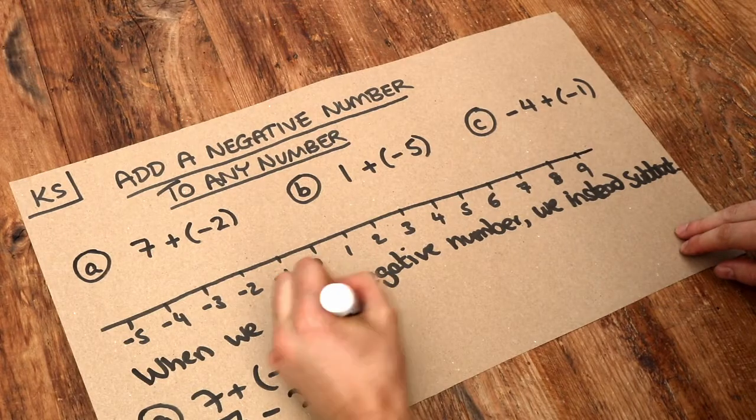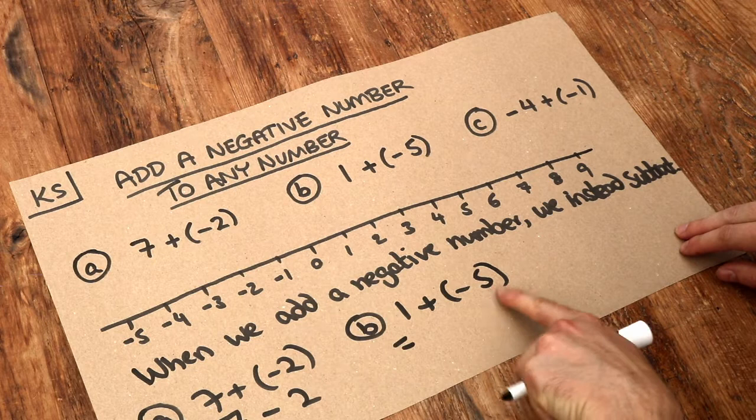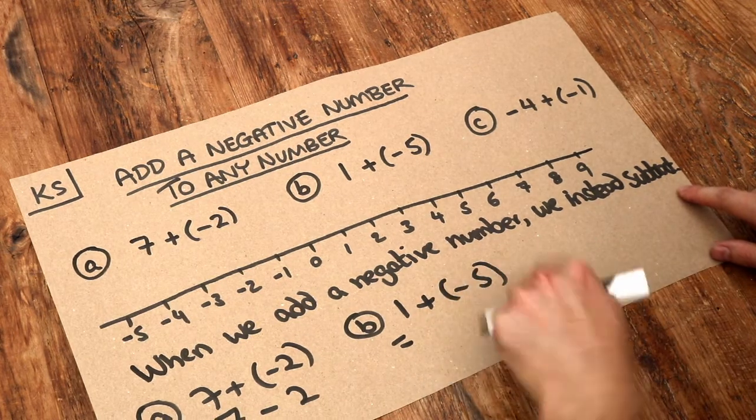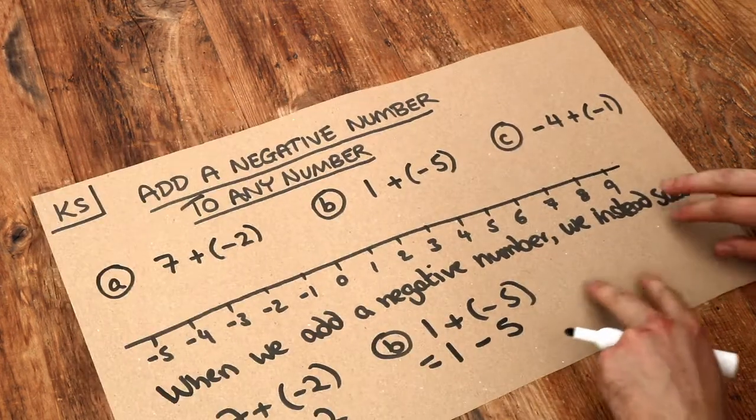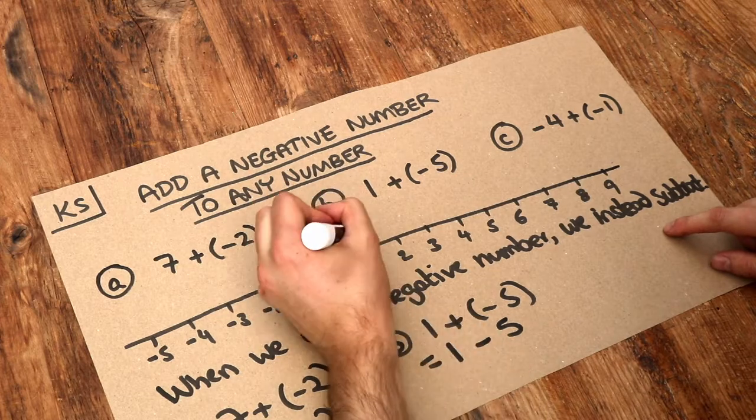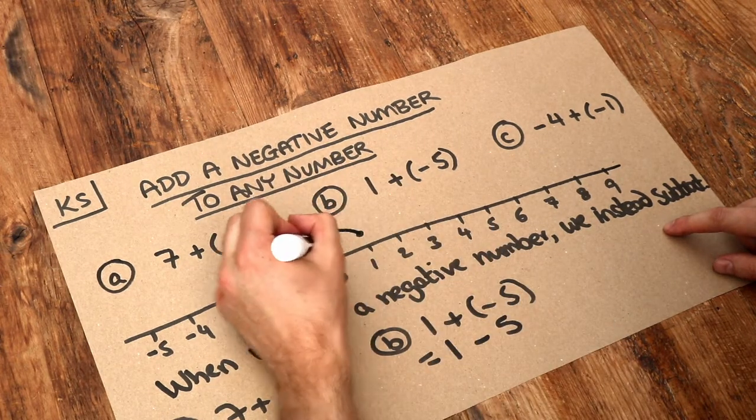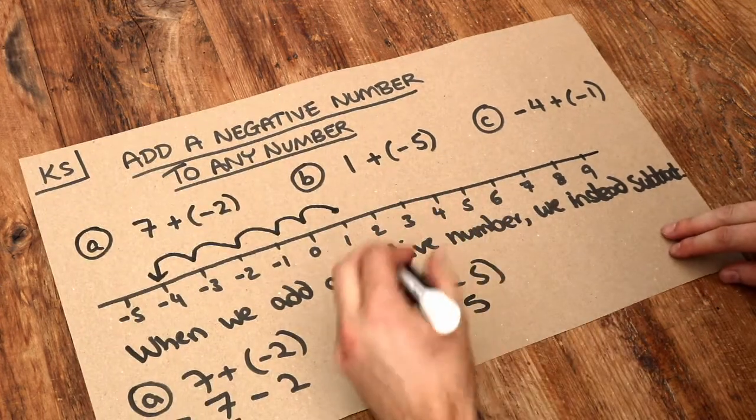What about the second one? 1 plus negative 5. Remember, when we add a negative number, we instead subtract. So we instead subtract 5. We do 1 minus 5. If we use a number line, we're starting at 1 here and we're subtracting 5, so we move 5 down the number line: 1, 2, 3, 4, 5. We end up at negative 4.